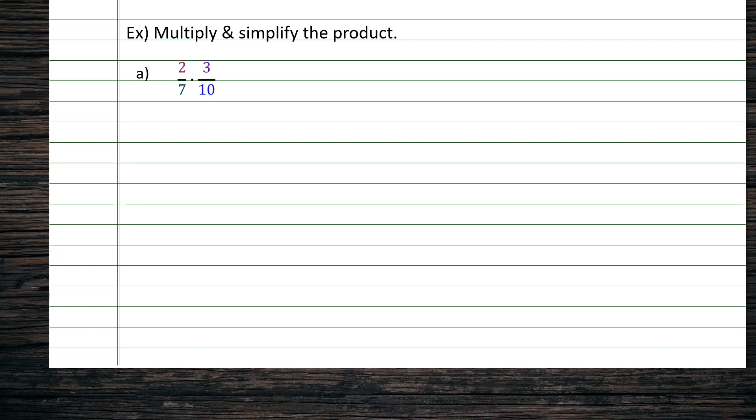Multiply and simplify the product. For example, A, we have 2 over 7 times 3 over 10.